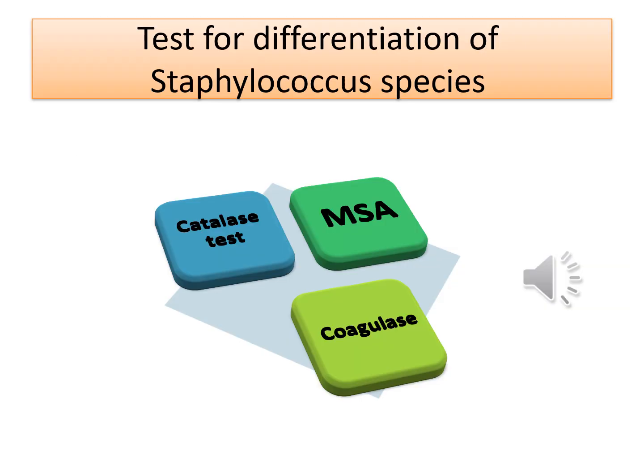The major test used to differentiate between Staphylococcus and Streptococcus is the catalase test, while the major test used to differentiate between Staphylococcus aureus and other Staphylococcus species such as albus and others requires mannitol salt agar and the coagulase test.